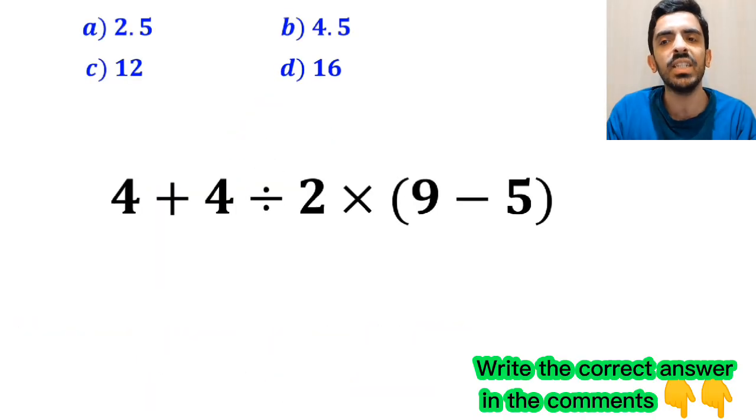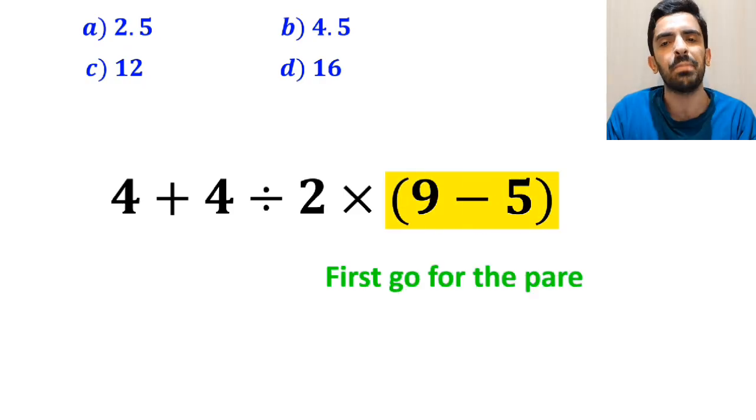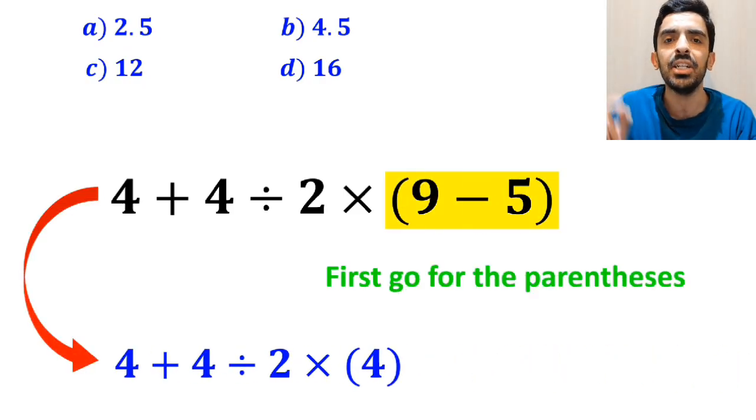Also, some other people, when solving this question, first go for the parenthesis and write this expression as 4 + 4 ÷ 2 × 4.